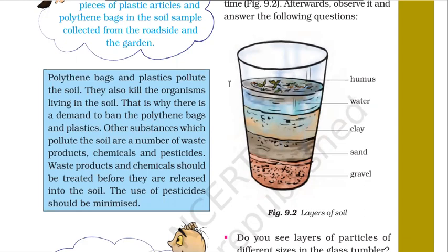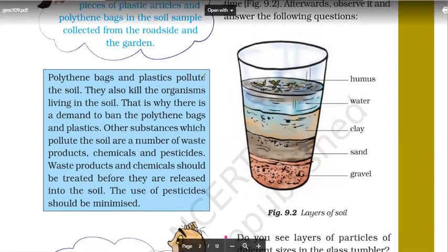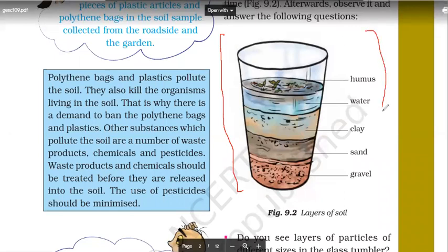When we talk about the layer of soil in detail on the earth surface — when you mix it in water — we can discuss the layers. When you mix some amount of soil in a glass of water, at the bottom of the glass the heaviest particles will settle down. The heaviest particle will be small stones, which are also called gravel. Gravel is basically small stones.